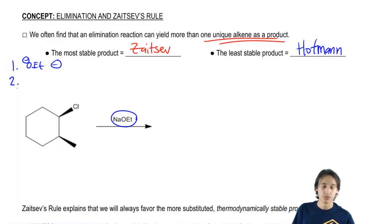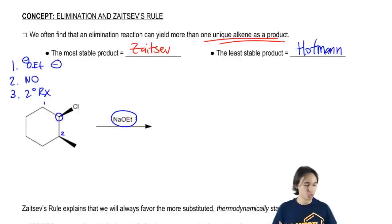Step two: Is NaOET one of my bulky bases? No. We have a list of bulky bases, and NaOET is not one of them. Third question: What type of alkyl halide do we have? This carbon is attached to two other carbons, so this would be a secondary alkyl halide. Do we know the mechanism now? No, we have to ask one more question.